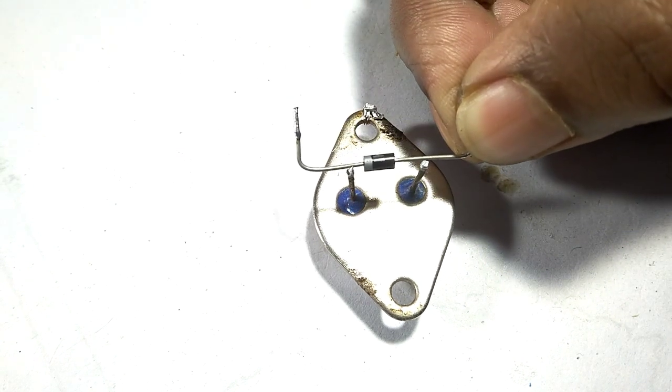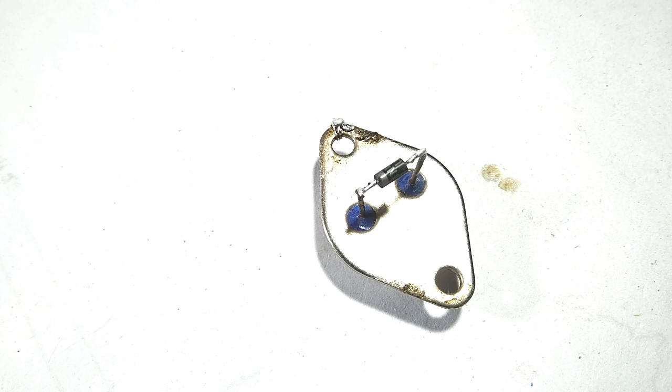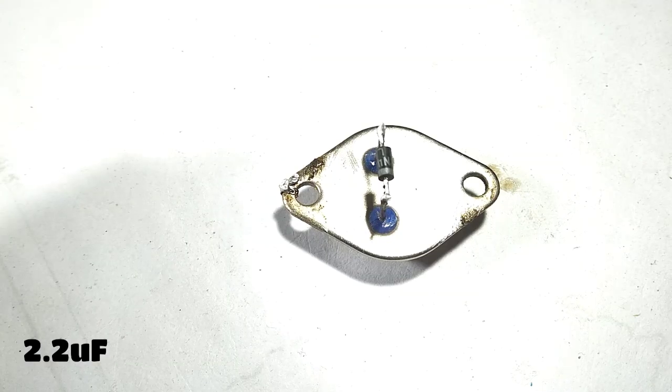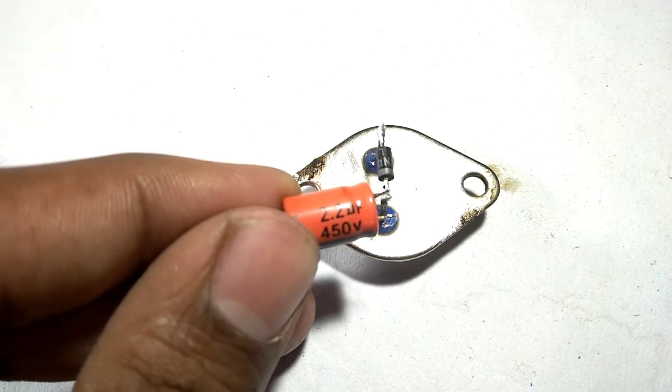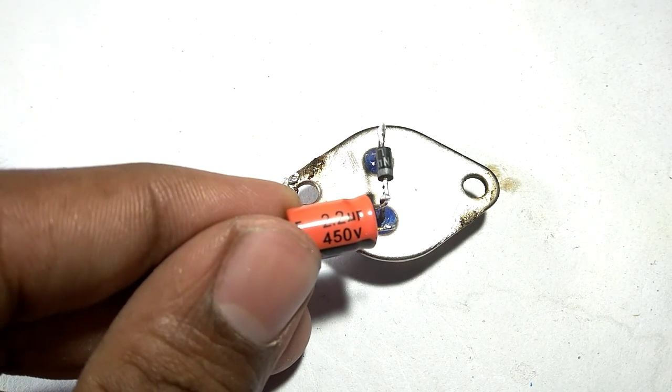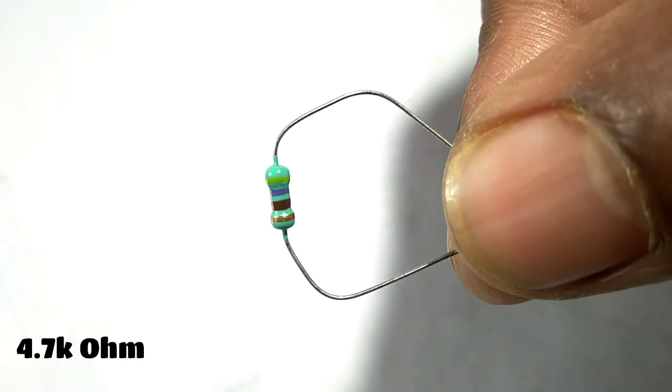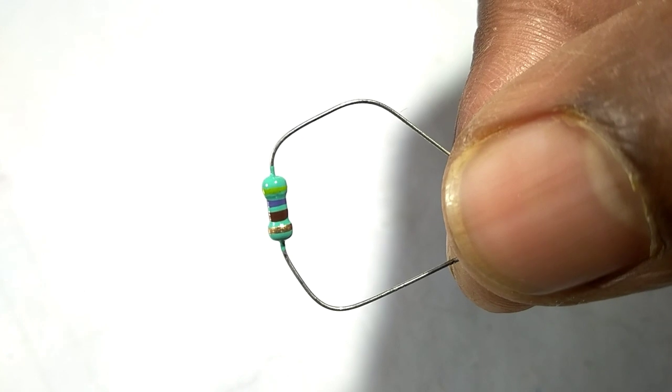Connect the transistor collector pin and cathode side to the transistor base pin. Then you need a 2.2 microfarad capacitor. Connect the capacitor positive terminal to the transistor collector pin or diode cathode pin.